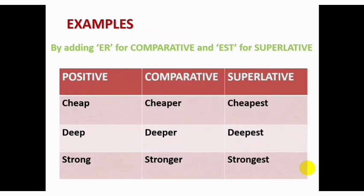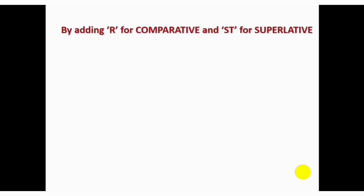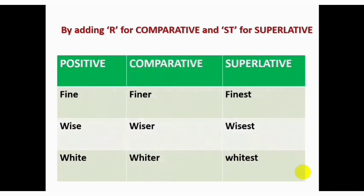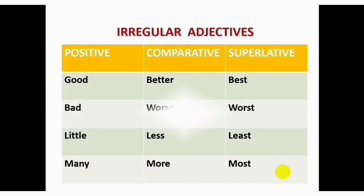Here, you see a chart on the screen. By adding R and ST at the end, positive can be converted to comparative and superlative. There is another chart for you. There are also some adjectives that you cannot convert. These are called irregular adjectives. Here, you see a chart also and they are called irregular adjectives.